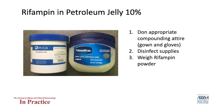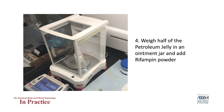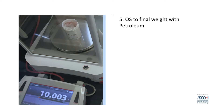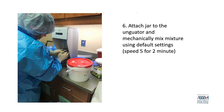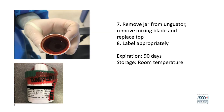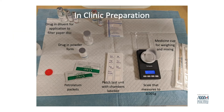Here is an example of rifampin being formulated from USP grade powder into a 10 percent patch test. Don appropriate compounding attire — gown and gloves — disinfect supplies, weigh rifampin powder, weigh half of the petrolatum jelly in an ointment jar and add rifampin powder, standardize to final weight with petrolatum, attach the jar to the unguator and mechanically mix using default settings — speed five for two minutes. Remove the jar, remove the mixing blade, replace the top, and label containers appropriately. Most drugs can be stored at room temperature with an expiration date of up to 90 days.